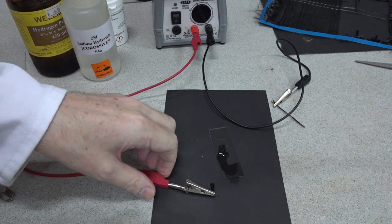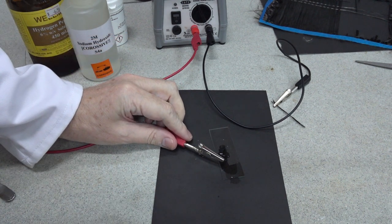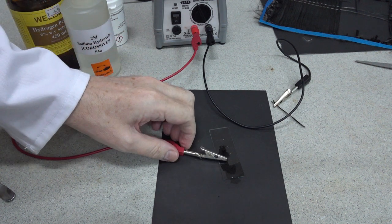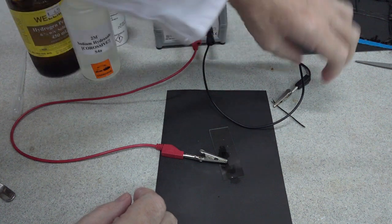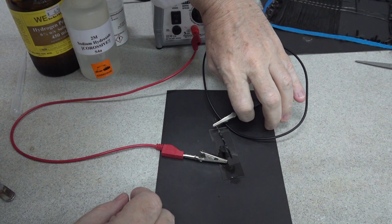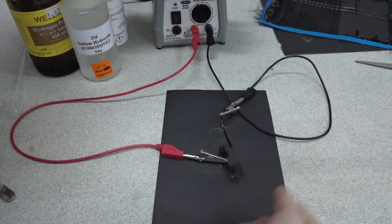Once we've done that, we then need to take the carbon fiber anode, which we'll place in the luminol there, and we'll also have a carbon fiber cathode which we'll place alongside it.